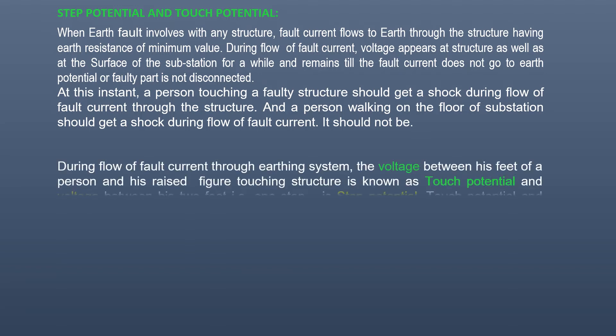During flow of fault current through earth system, the voltage between his feet of a person and his raised finger touching structure is known as touch potential, and voltage between his two feet, that is one step, is step potential. Touch potential and step potential is minimized by minimizing earth resistance using earth mat.